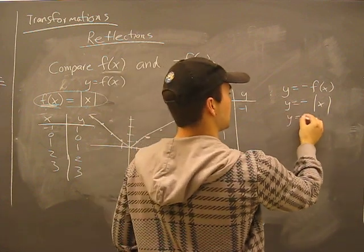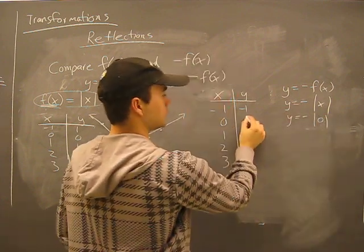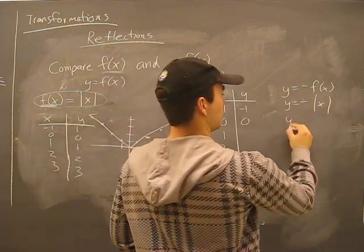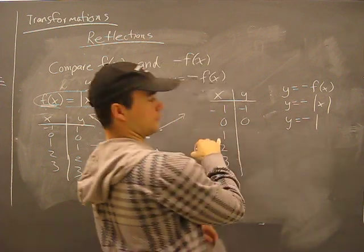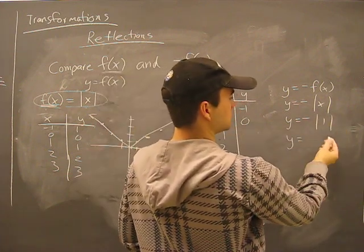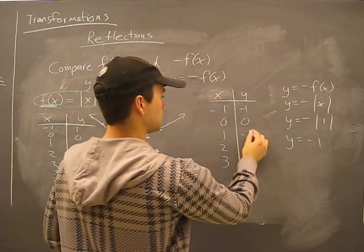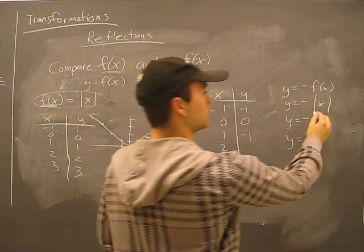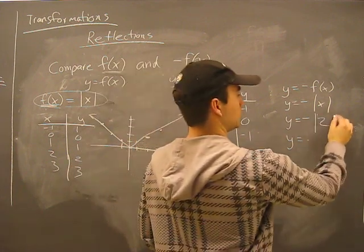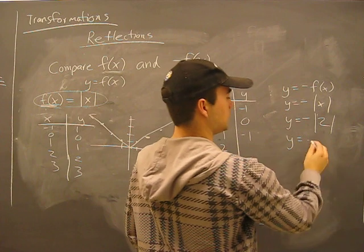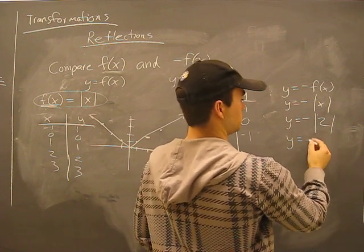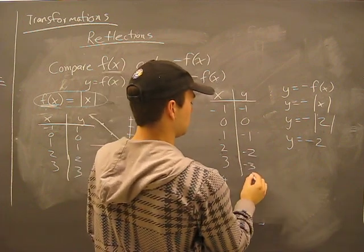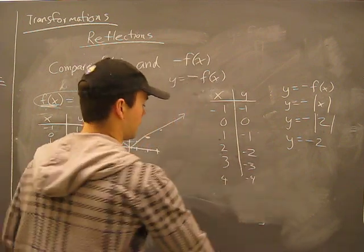y equals negative f(x), which is negative absolute value of x. For x equals zero: y equals negative absolute value of zero, which is zero. For x equals one: y equals negative absolute value of one, which is negative one. For x equals two: y equals negative absolute value of two, which is negative two. See the pattern — it will go like that forever.